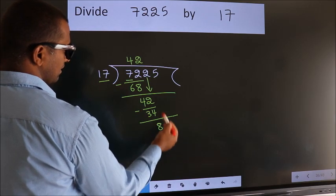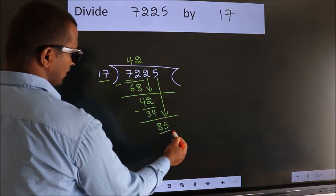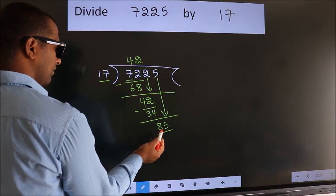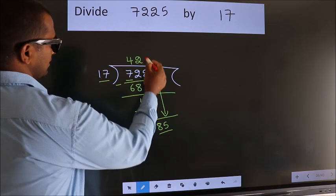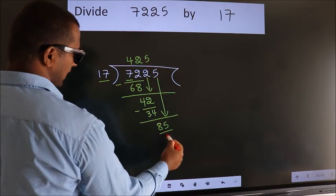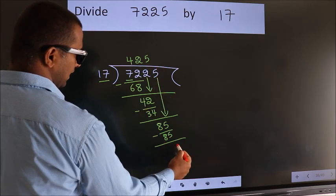After this, bring down the next number. So 5 down, giving us 85. When do we get 85 in the 17 table? 17 times 5 is 85. Now we subtract. We get 0.